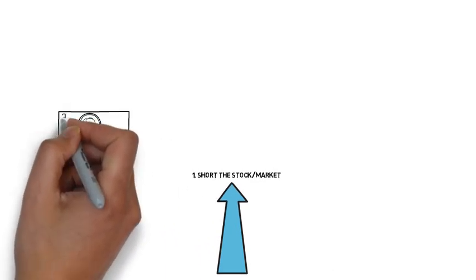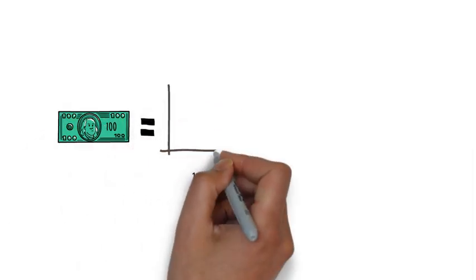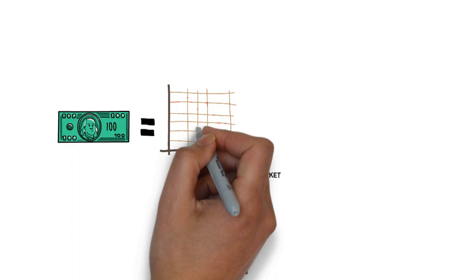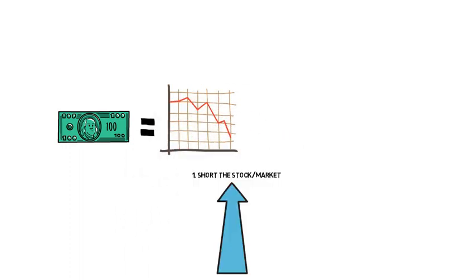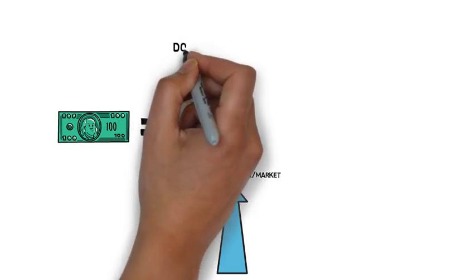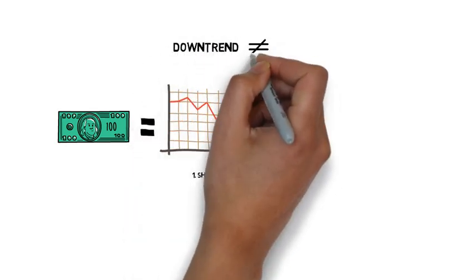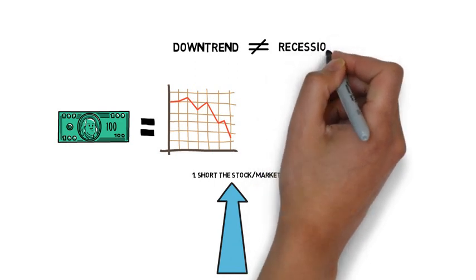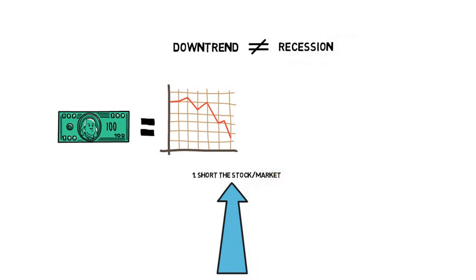When you short a stock, you will make money when the market is on a downtrend or a recession. So usually both of them will go hand in hand, but note that either one does not indicate the other. A downtrend does not necessarily indicate a recession, neither does a recession will mean that the market is on a downtrend.